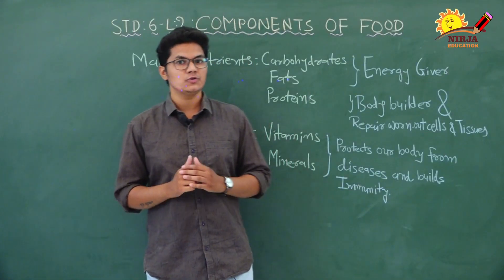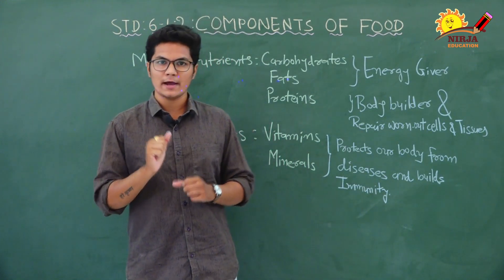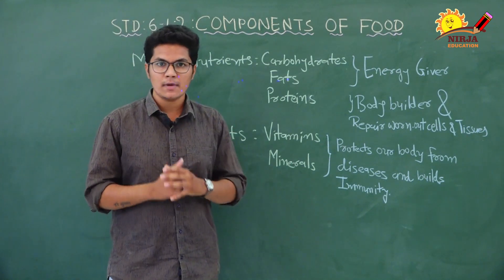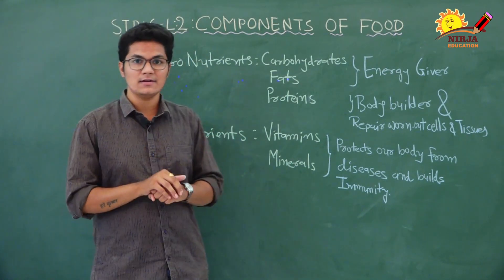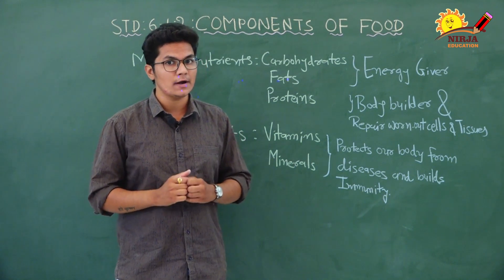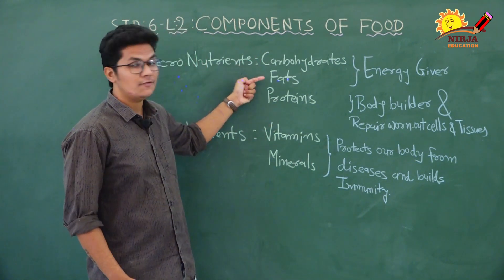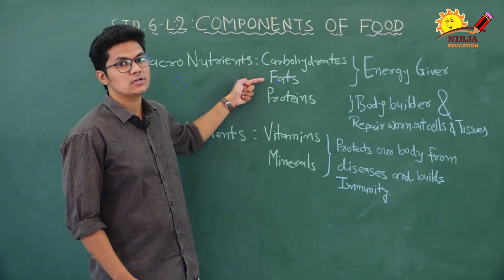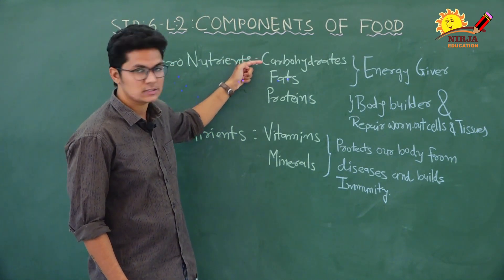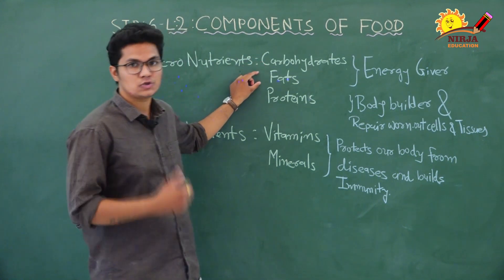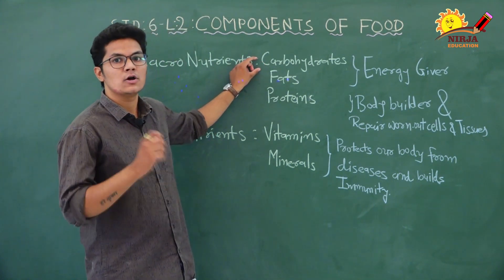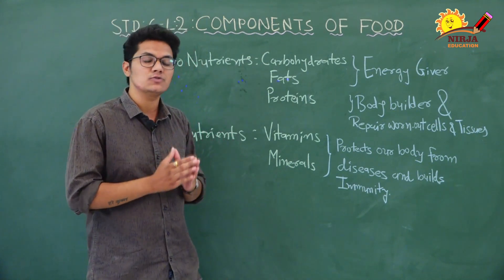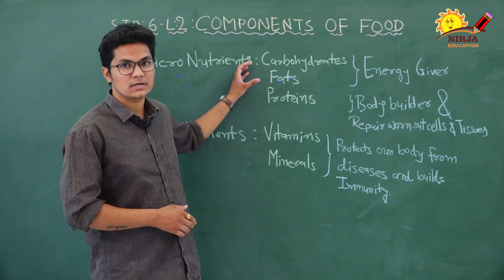In our previous video we learned about macronutrients — carbohydrates, fats, and proteins. These are energy-giving nutrients. Carbohydrates and fats give our body energy. Fats give us double the energy of carbohydrates and also store energy in our body. In carbohydrates, sugar gives us instant energy and starch gives energy more slowly than sugar.